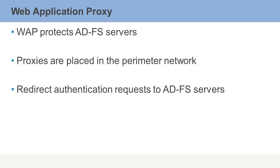If there are multiple applications running on multiple servers, it will also redirect them to the appropriate server where the application the user is trying to access resides. So it provides two services: the redirection of the authentication request and the application request to the appropriate server. This is only applicable if you have multiple servers hosting multiple applications.